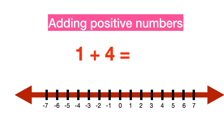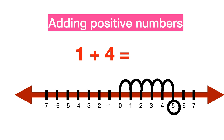To add 1 and 4, first locate number 1, then move to the right 4 steps. The number you land on after moving 4 steps from 1 is 5. Therefore, 5 is the correct answer.